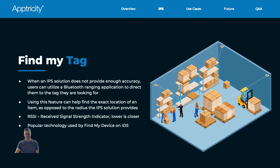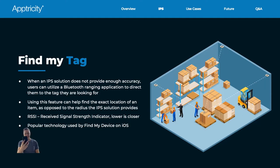So Find My Tag — also known as Find My Asset — uses Bluetooth RSSI values to indicate whether you're moving closer to an item. One of the big use cases we'll get into later for IPS is finding lost or misplaced items in a large area. If IPS gets you within a 30-foot radius of where we think the item may be, Find My Tag is the best feature to get you to exactly where it is. Find My Tag, Find My Asset, Find My Inventory — whatever you want to call it — is the feature that lets you literally walk around using your phone until you can see the item.